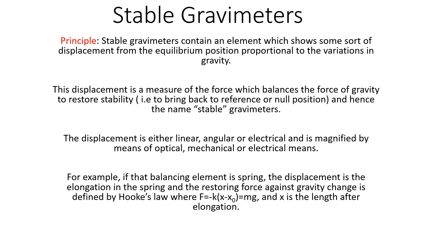Because of small changes in the value of gravity, there is a change in the weight of the mass and a corresponding displacement in the spring. This displacement is the measure of the restoring force in the spring which counteracts the gravity change. The restoring force is given by Hooke's Law, which equals the change in weight. If X is the length after elongation and M is a constant, we can calculate the relative changes in G — the changes in gravity before and after elongation.